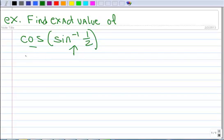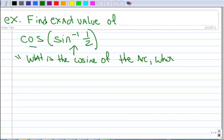But let me just tell you what this says. This says, what is the cosine of the arc whose sine is 1 half? That's what that says.